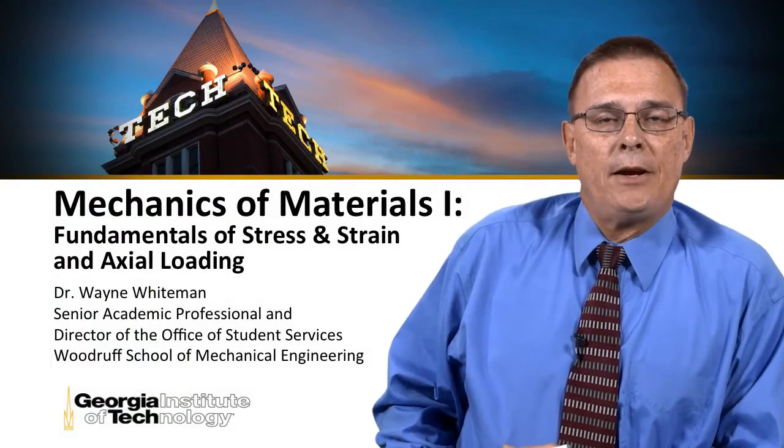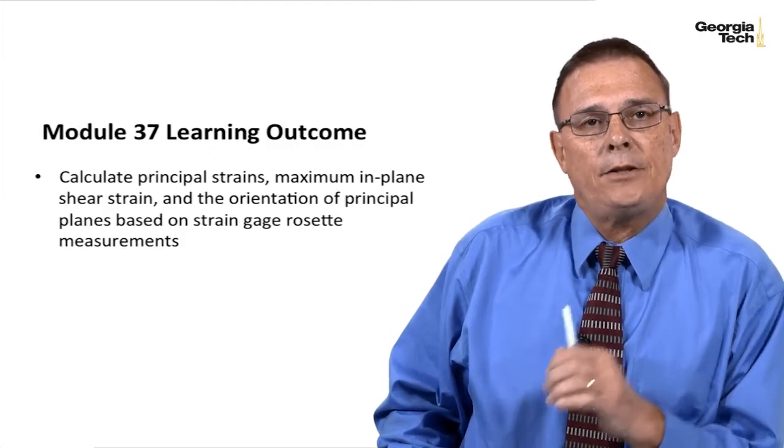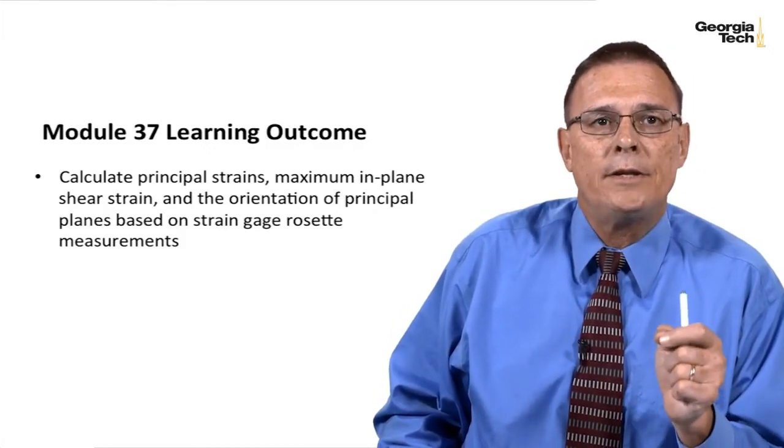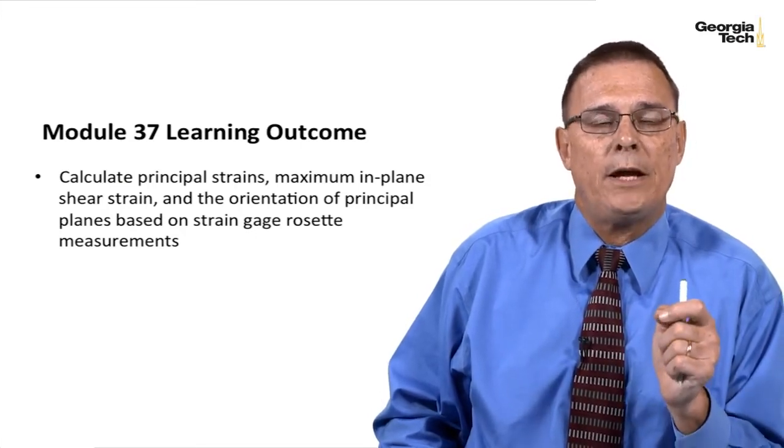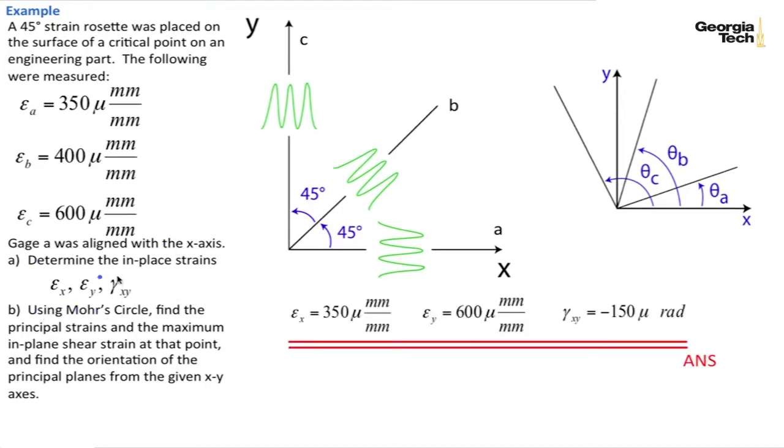This is Module 37 of Mechanics and Materials Part 1. Today's learning outcome is to calculate the principal strains, the maximum in-plane shear strain, and the orientation of the principal planes based on the strain gauge rosette measurements that we had. Here's where we left off last time. We had these three in-plane strains, normal strains, that were measured. We went ahead and found the in-plane strains, both normal strains and shear strain.